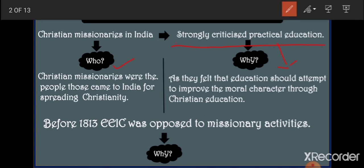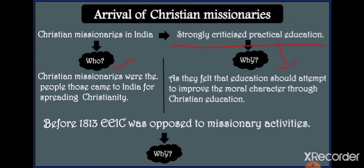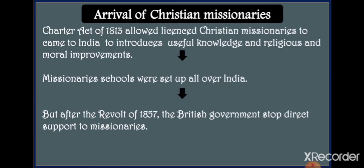The reason is clear — at that time the Britishers were not ready to hurt Indian sentiments, as it would be a negative point for them. That is why they banned the arrival of Christian missionaries. But after the Charter Act of 1813, the Company allowed licensed missionaries into India. That means missionaries had to register themselves with the English East India Company first, and only then were they allowed to come to India to spread their religion.